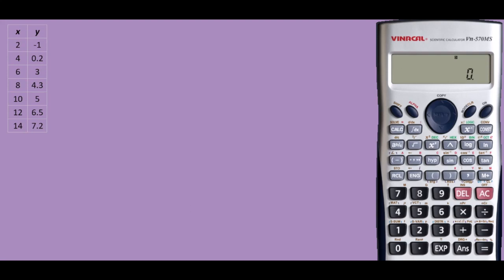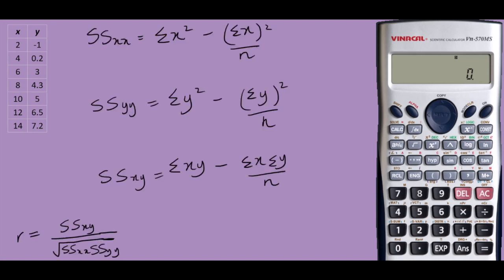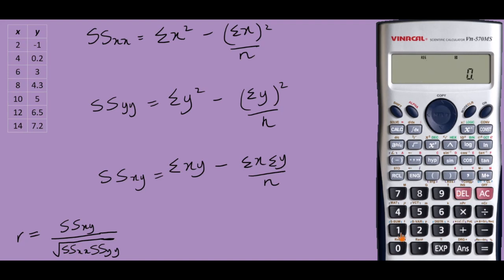I would start with calculating the correlation coefficient. Let's start by inserting the data in our calculator. I would choose Mode, then Stat mode twice, and choose 2 for regression. This is a simple linear regression — I would choose 1 for linear regression.